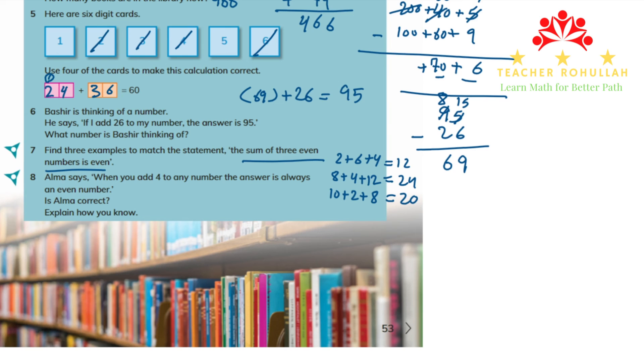In the last question, which is question 8, Alma says when you add 4 to any number, the answer is always an even number. Is Alma correct? Explain how you know. Alma is not correct over here. For example, if we add 4 with 8, we get 12, which is an even number. But if we add 4 with 5, we cannot get an even number. We get 9. 9 is not even, 9 is an odd number. So in this case, we can say that Alma is not correct. And it says explain how you know. We can see from the example that 4 plus 5 is equal to 9, so it shows that Alma is not correct. We cannot get an even number whenever we add any type of number with 4. Question 8 is also solved.